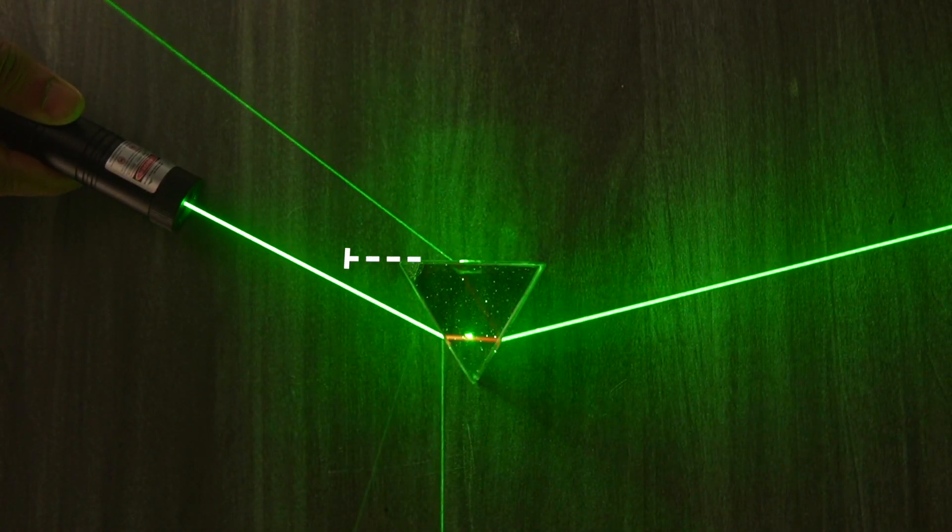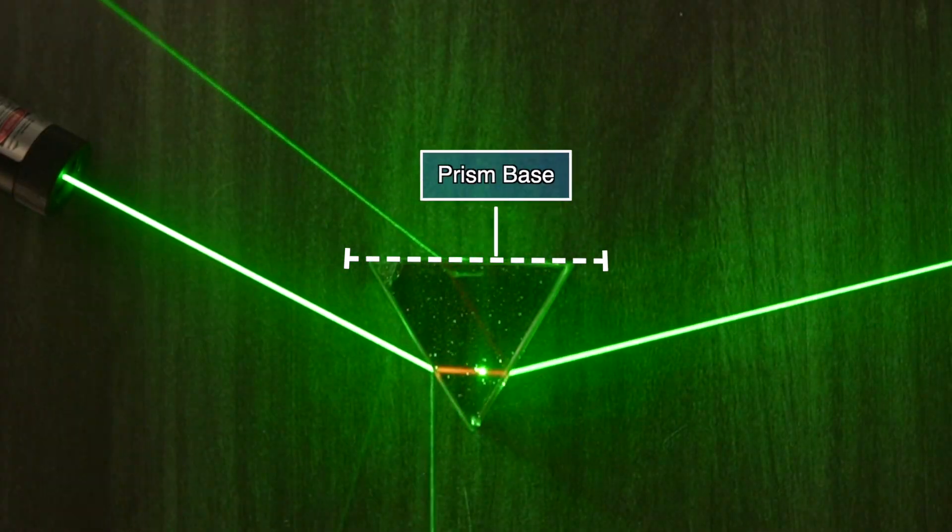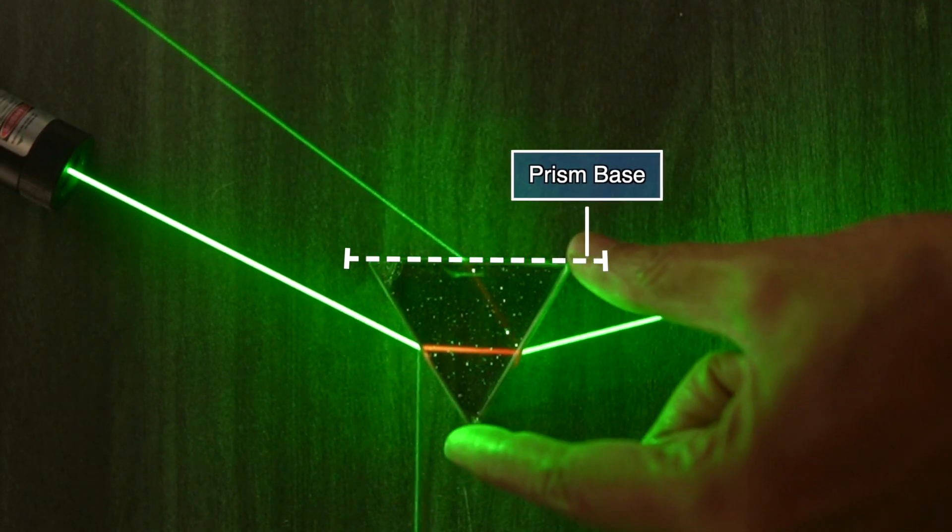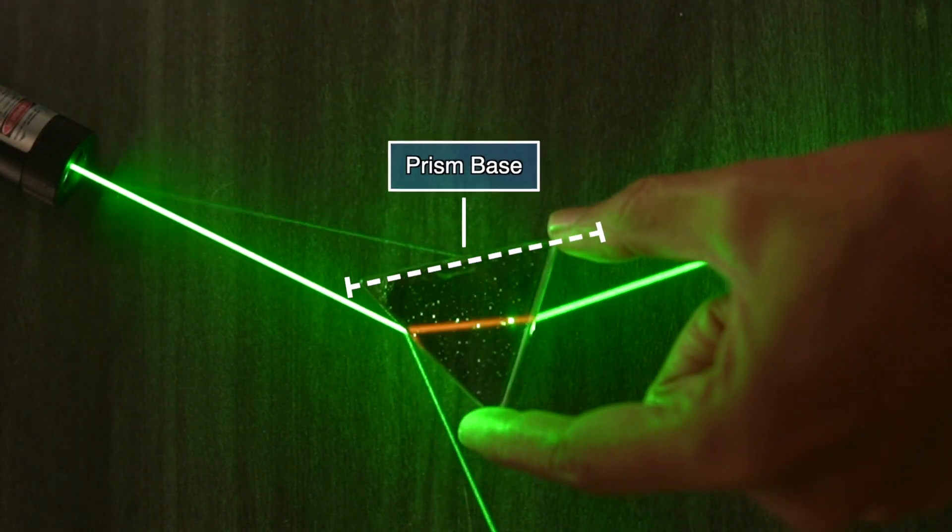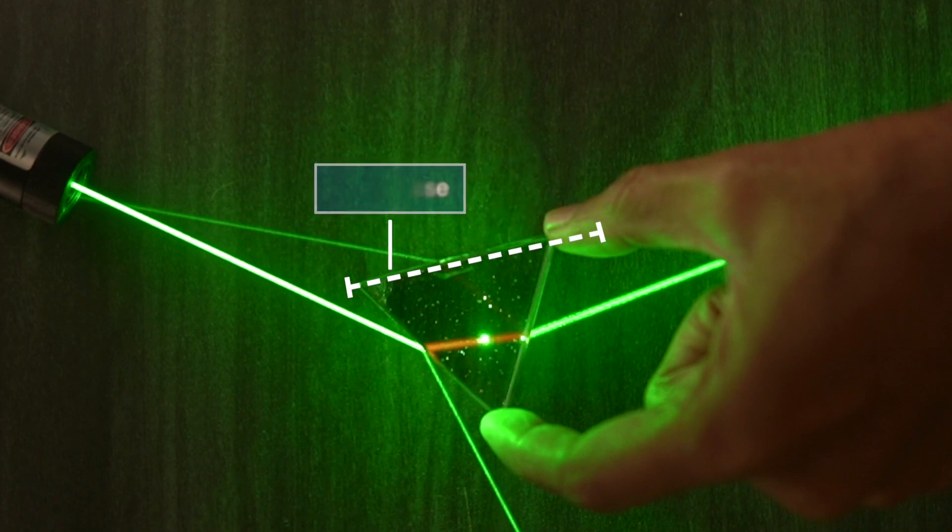When a straight beam of light falls obliquely on the lateral surface of a prism, it always bends towards its base.